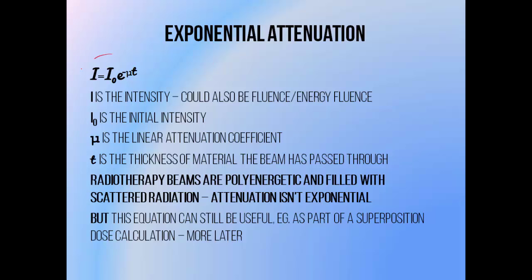Pure exponential attenuation follows this equation: I = I₀ × e^(−μt), where I is the final intensity — the number of photons left after passing through a certain thickness of material. I₀ is the number of photons you start with. e is Euler's number, roughly 2-point-something, and its presence is what makes this equation exponential. μ (mu) is the attenuation coefficient, which determines how quickly a medium attenuates a beam, and t is the thickness of material the beam passes through.